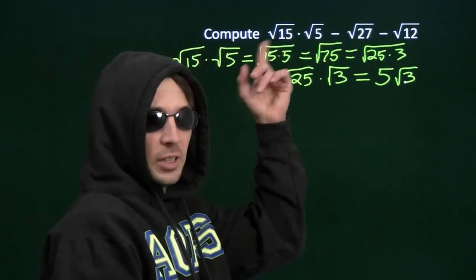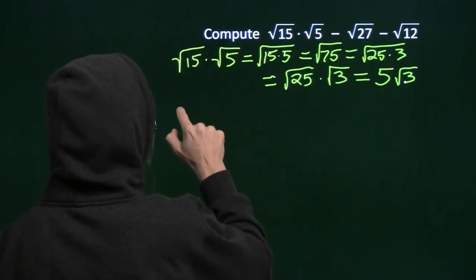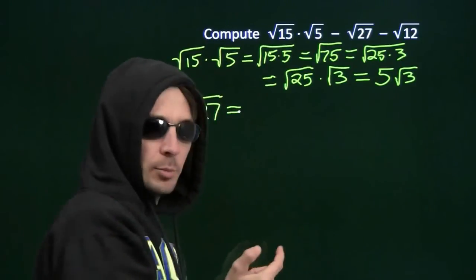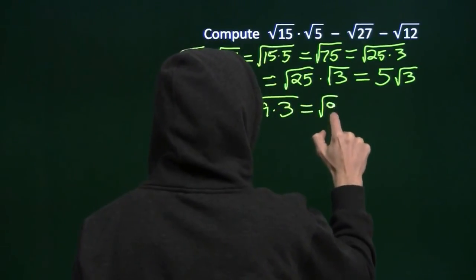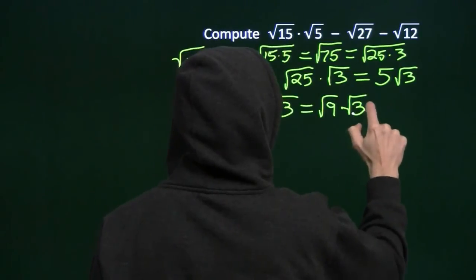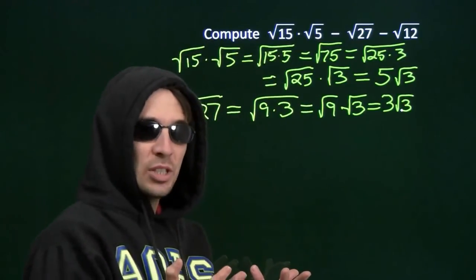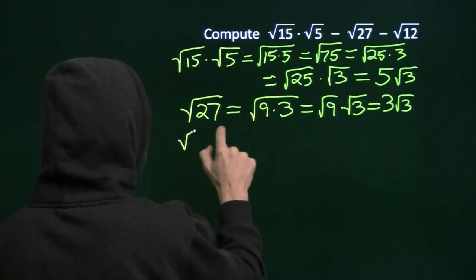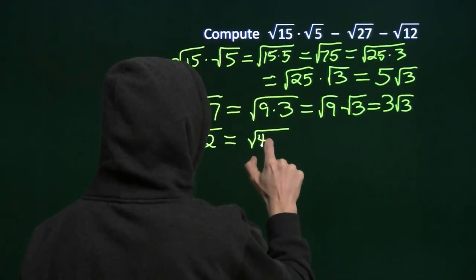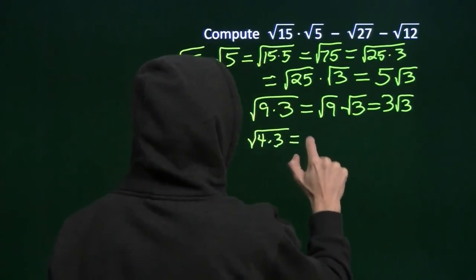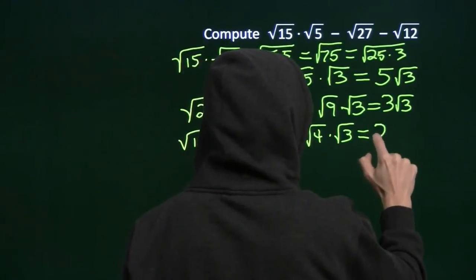So that product — square root of 15 times the square root of 5 — equals 5 times the square root of 3. Now let's take a look at the square root of 27. Well, 27 is just 9 times 3, so this is the square root of 9 times the square root of 3. The square root of 9 is 3, so the square root of 27 is 3 times the square root of 3. Now square root of 12 — 12 is 4 times 3, and 4 is a convenient perfect square. So we have the square root of 4 times the square root of 3. Square root of 4 is 2, giving us 2 times the square root of 3.